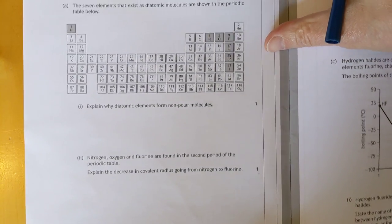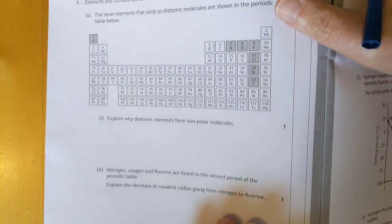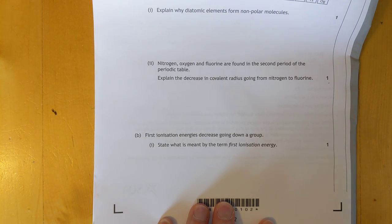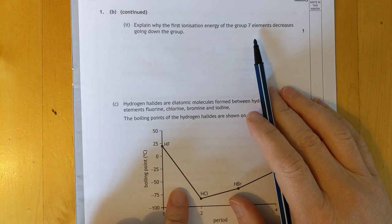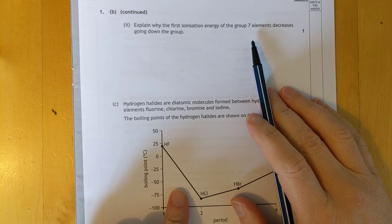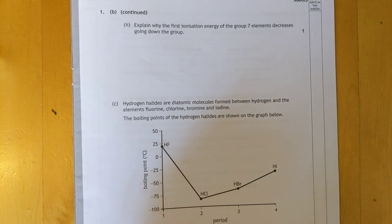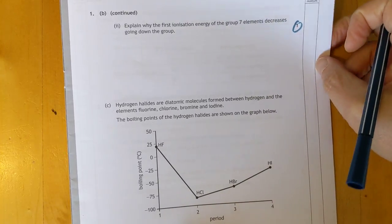First ionisation energy. This question is asking for the definition of the first ionisation energy. It's the energy required to remove one mole of electrons from one mole of gaseous atoms. I don't know how many of these keywords will be in the actual answer scheme. That's why this is very much an unofficial answer scheme.